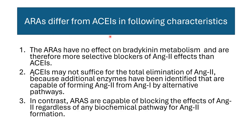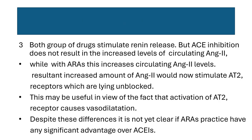Angiotensin receptor antagonists differ from ACE inhibitors in several ways. ARBs have no effect on bradykinin metabolism and are therefore more selective blockers of angiotensin 2 effects. ACE inhibitors may not suffice for total elimination of angiotensin 2 because additional enzymes can form angiotensin 2 from angiotensin 1 by alternative pathways. In contrast, ARBs block the effects of angiotensin 2 regardless of its biochemical pathway of formation. Both drug groups stimulate renin release as feedback, but ACE inhibitors do not result in increased circulating angiotensin 2 levels while ARBs do.